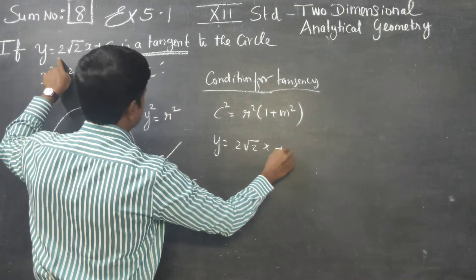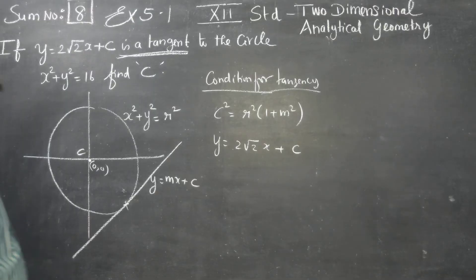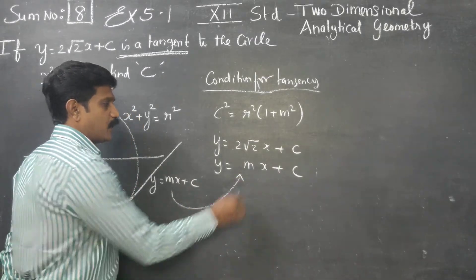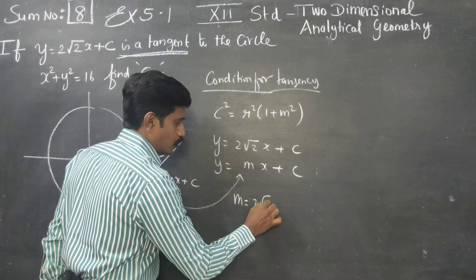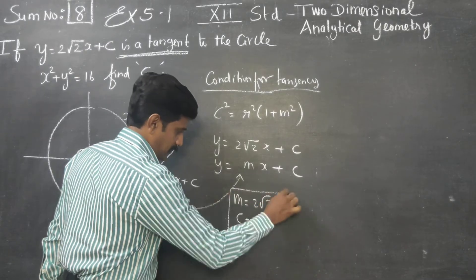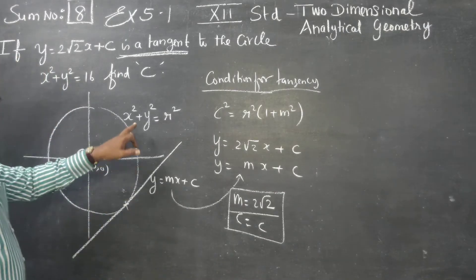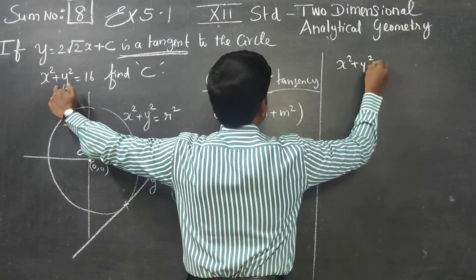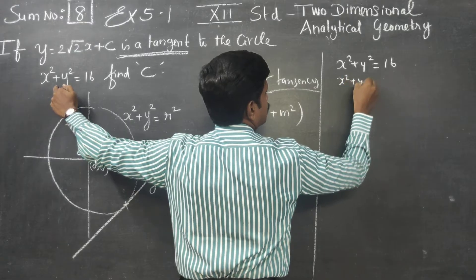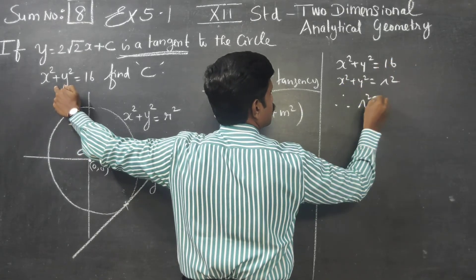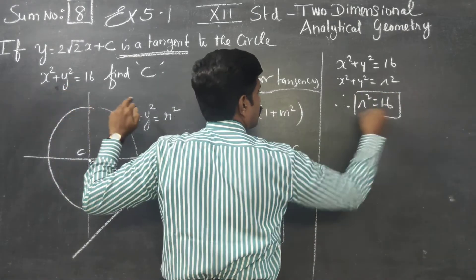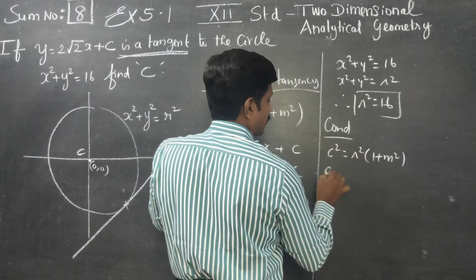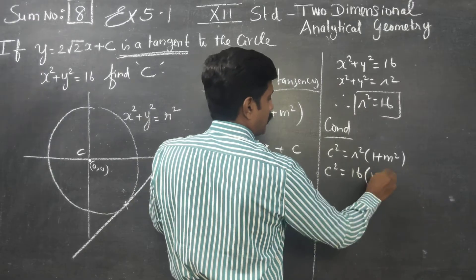Starting the sum: y is equal to 2 root 2 x plus c. Matching with the formula y is equal to mx plus c, my m is equal to 2 root 2, and my c is c. The equation of the circle is x square plus y square is equal to 16, that is x square plus y square is equal to r square, therefore my r square is equal to 16.